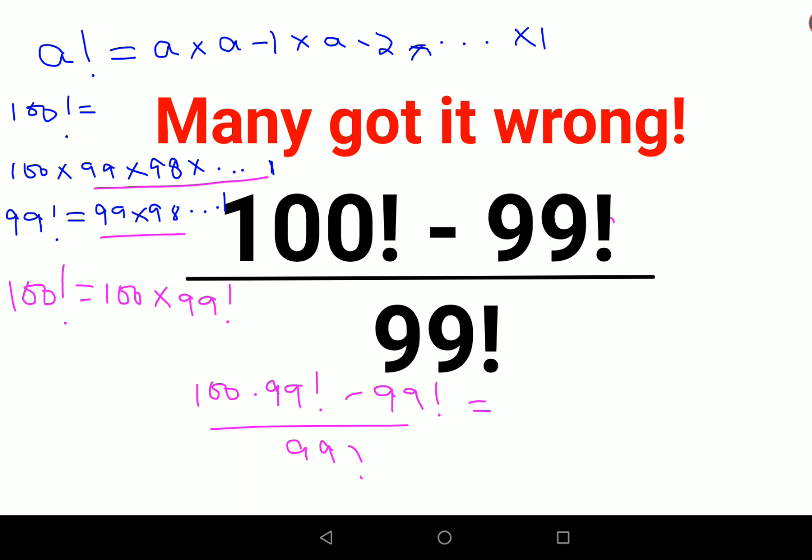From here we can take the 99 factorial outside. I'm left with 100 minus 1 upon 99 factorial. This and this gets cancelled, and I'm left with 100 minus 1.